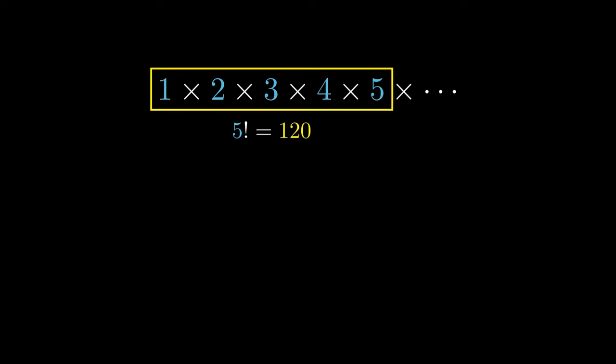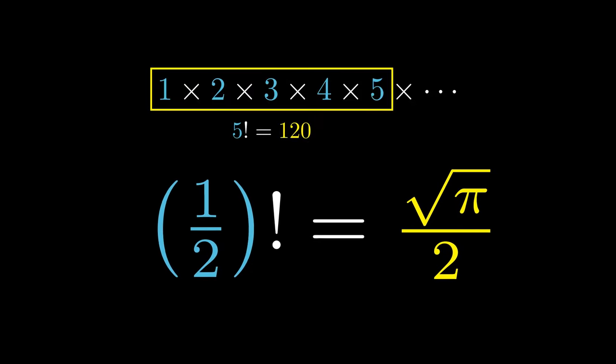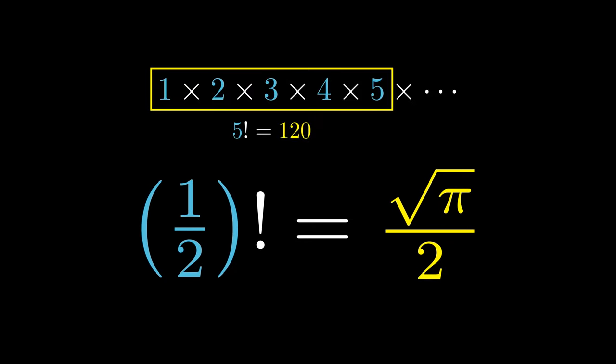So this is the question. What is half factorial? You might be surprised, but the answer is the square root of pi all divided by 2. This requires the use of the gamma function as well as the Gaussian integral, which are ideas in undergraduate mathematics.